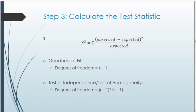Step three is calculating our test statistic. The chi-squared test statistic formula is the sum over all cells of (observed minus expected)² divided by expected. Since we work with multiple variables or populations, we compute this fraction for each cell and add them all up. For goodness of fit, degrees of freedom equals k minus 1, where k is the number of groups. For tests of independence and homogeneity, degrees of freedom equals (number of rows minus 1) times (number of columns minus 1).